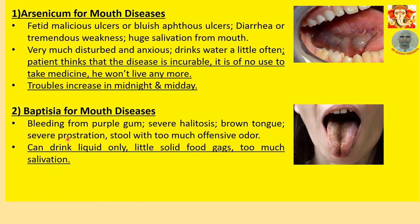Number 2: Baptisia for mouth diseases. Bleeding from putrid gums. Severe halitosis. Brown tongue — please look at the picture. Severe prostration. Stool with too much offensive odor. Can drink liquid only; little solid food causes gagging. Too much salivation — this is the general symptom, most important to select the medicine for a particular case.